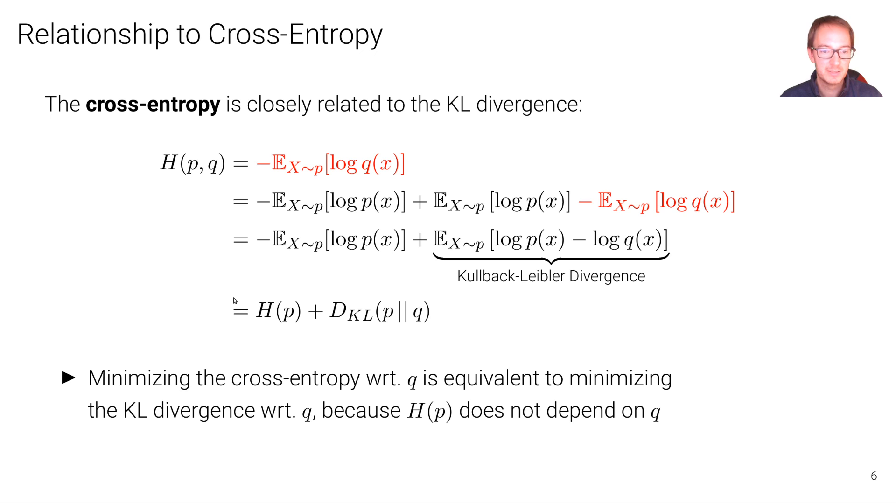So there's a direct relationship here between the cross-entropy and the Kullback-Leibler divergence. And what you can also see is that minimizing the cross-entropy with respect to Q is equivalent to minimizing the Kullback-Leibler divergence with respect to Q because the entropy of P does not depend on Q. There's no Q in this term here. So it's constant with respect to Q. So minimizing this with respect to Q is equivalent to minimizing Kullback-Leibler divergence with respect to Q.